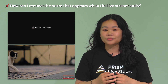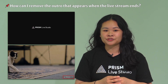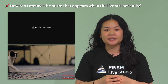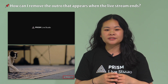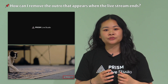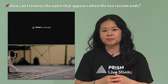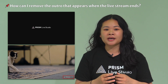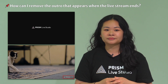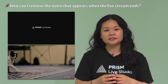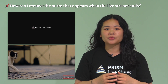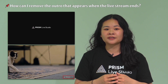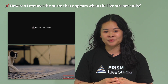Currently, the Prism app doesn't offer a way to remove this outro. In the Prism app, when you click the end button to end your live stream, there is a delay of about three seconds before the actual stream ends. During this time, the Prism application's outro is shown. Discussions about the ability to customize the outro are ongoing. Once we have an announcement regarding this, we'll share the news on our Medium blog.